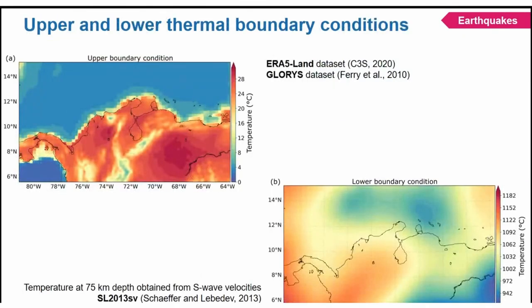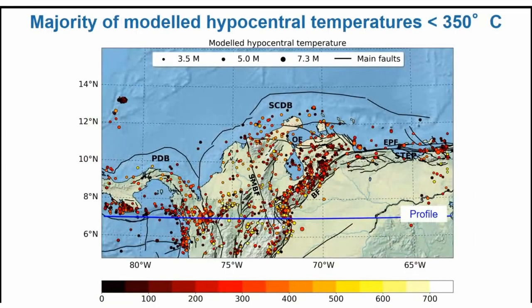To account for both upper and lower thermal boundary conditions, I'm showing the boundary conditions map. For land observations I use the Artemieva heat flow dataset; for the ocean I use the global heat flow dataset. The lower boundary condition is the temperature at 250 km depth, converted from S-wave velocities into temperatures. Higher velocities — associated with lower temperatures — likely reflect the slab signals from the subducting Caribbean and South American plates.